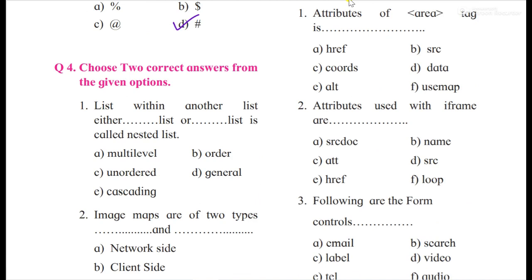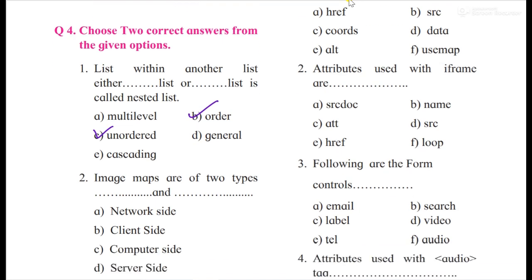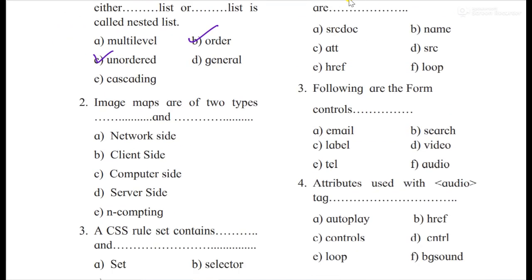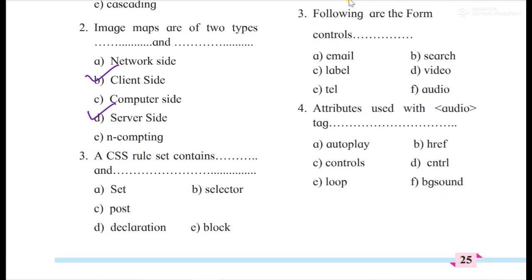Choose two correct answers from the given options. List within another list, either dash list or dash list is called nested list. So you can say the answer will be ordered and unordered list. Either ordered list or unordered list is called list within another list. Image maps are of two types, client side and server side.